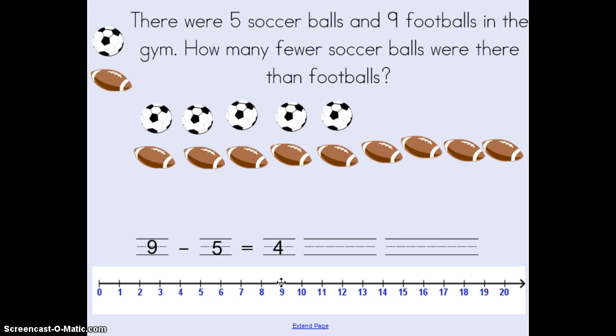I'm also going to use my number line to make sure that my answer is correct. So I'll start at nine and I'll hop backwards five times: one, two, three, four, five. Again I land on the answer four and that confirms that that is the correct answer.